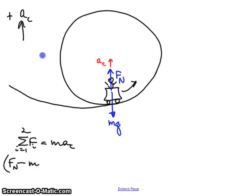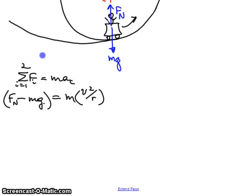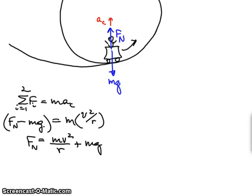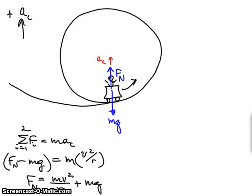MG points downward. So: normal force minus MG equals M times AC, and I can replace AC with V squared over R. If I want to find the force I feel — the normal force, the seat pushing against me — it's going to be M·V²/R plus my own weight. So I'm going to feel heavier at the bottom.